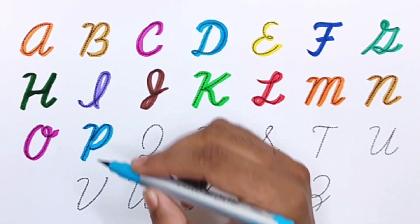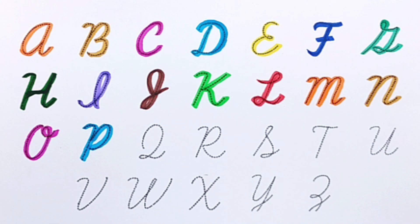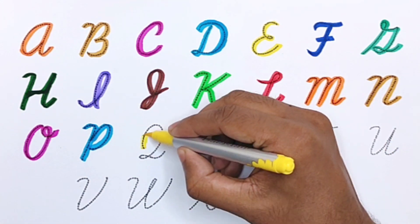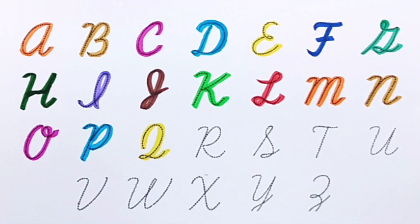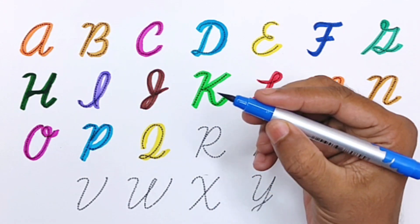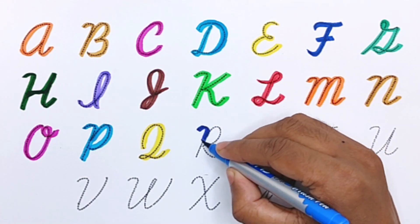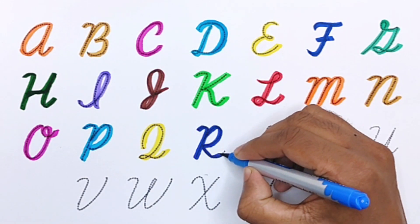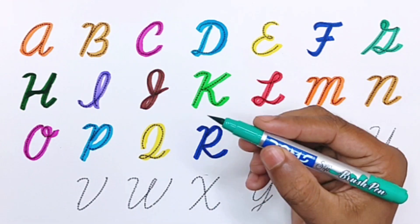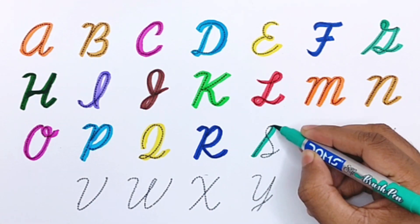Yellow color Q, Q for Queen. Blue color R, R for Rainbow. Green color S, S for Strawberry.